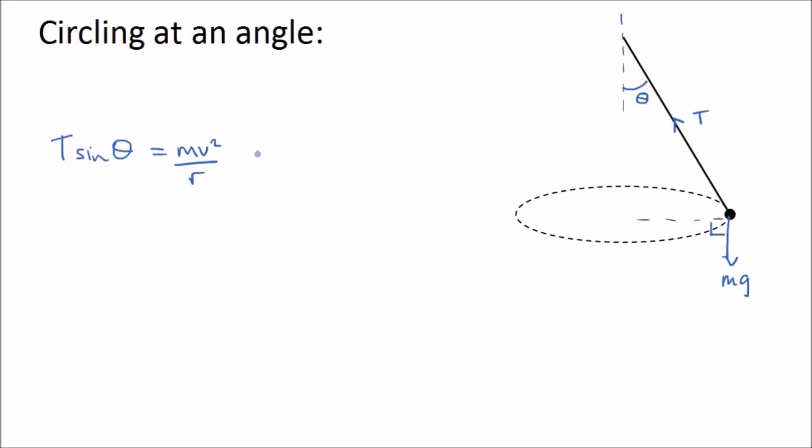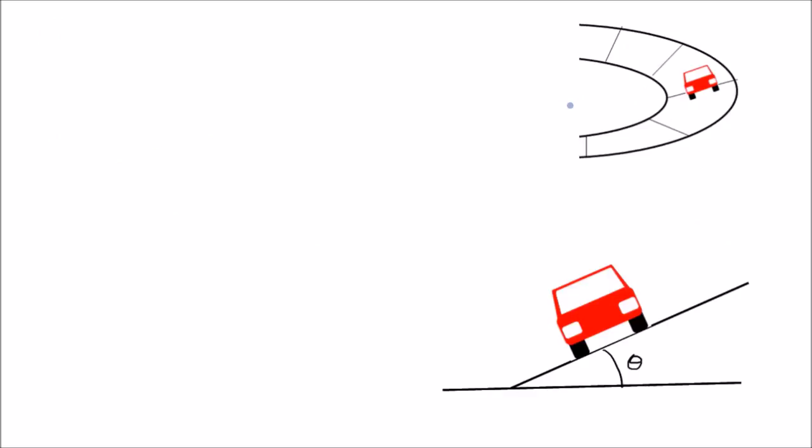And the way we work it out will depend on which angle you are given. In this example we're given this angle, but we may be given a different angle and that will change what we write here. You might see it looking like this instead. And this is a car on a banked road or on a banked track. And we need to think what is the centripetal force here. So let's analyze it. Let's look at the diagram below.